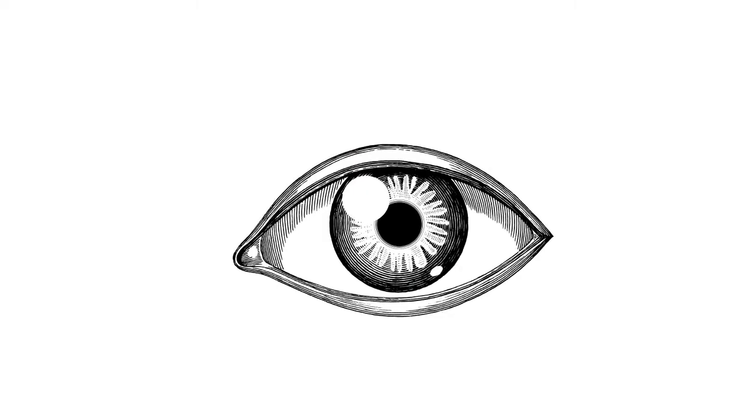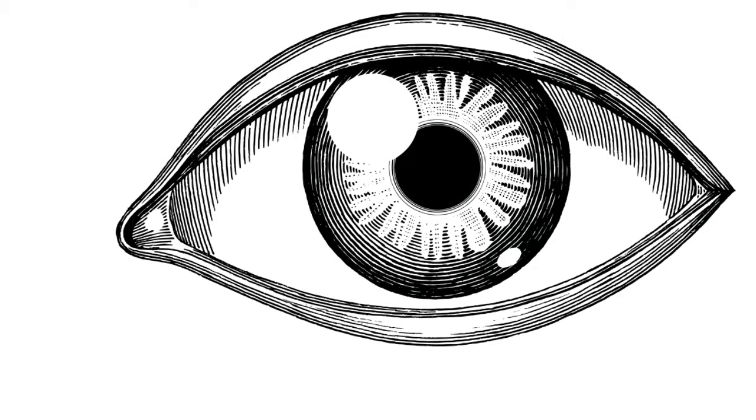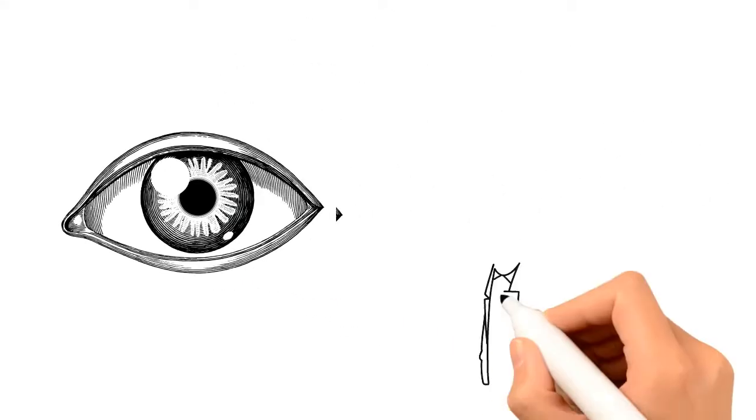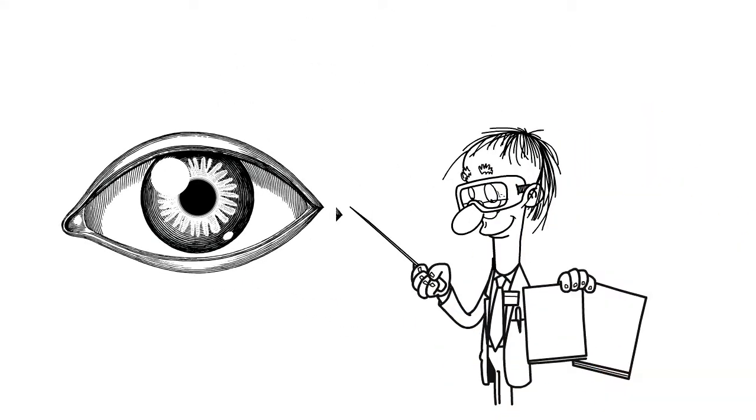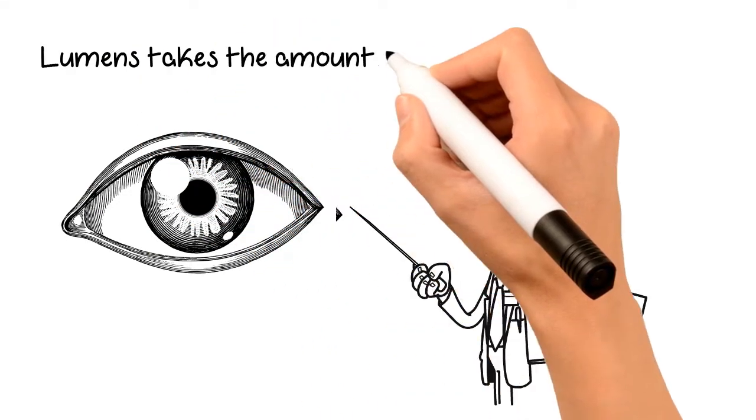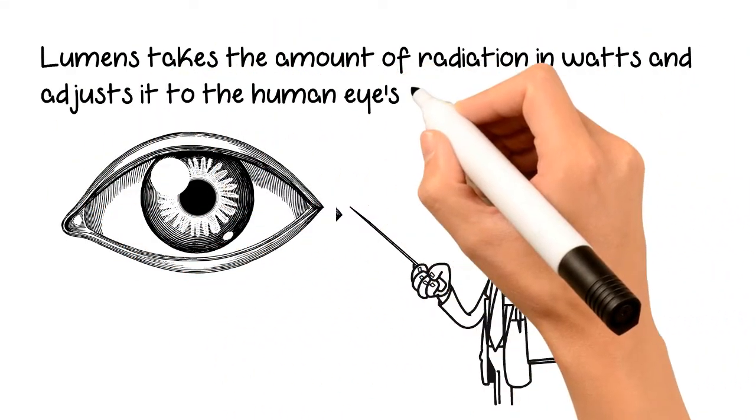The human eye is more sensitive to certain colors, and to account for this variation, scientists measure the light that humans see in lumens. Lumens takes the amount of radiation in watts and adjusts it to the human's eye sensitivity.